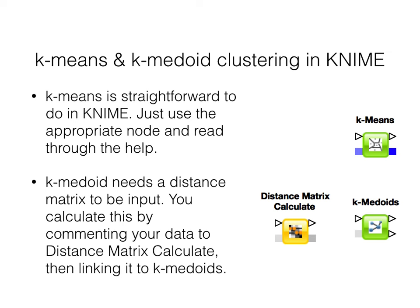Both k-means and k-medoids are straightforward in KNIME. K-means just uses the k-means node — set the k and you're done. K-medoids is a bit different: it needs a distance matrix, so you connect your data to the distance matrix calculate node, configure the distance function, and what comes out is your original data with the distance matrix appended. Feed that into the k-medoids node to perform the clustering.